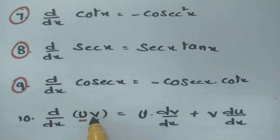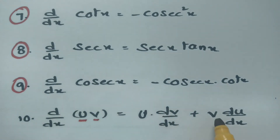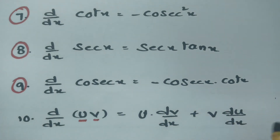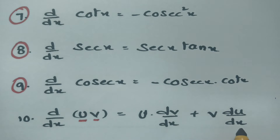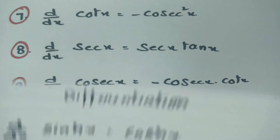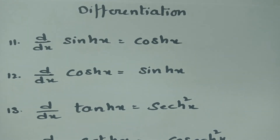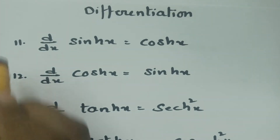For the product of uv, we use the product rule. We leave u as it is and integrate v, then differentiate. Next, we leave v and make a derivative with respect to x for u. So the derivative is u·(dv/dx) plus v·(du/dx). This is the derivative formula for the product rule.